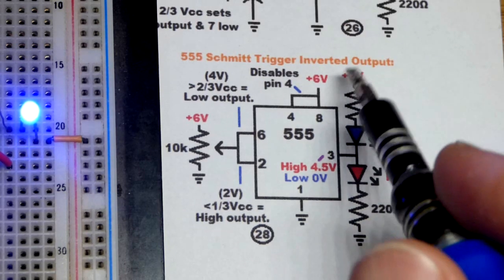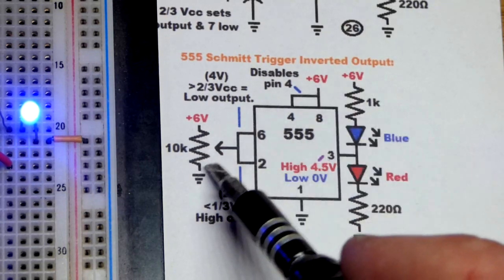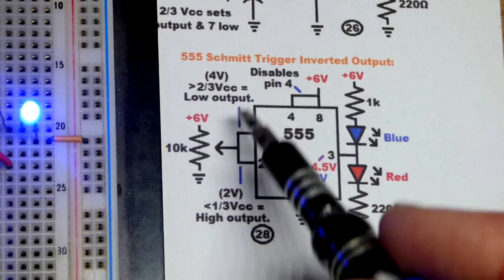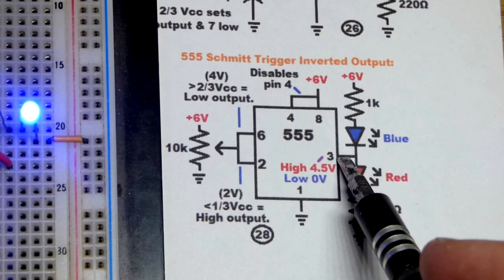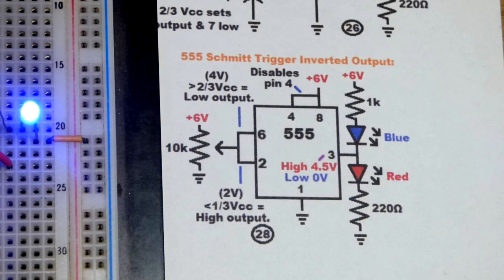You get about 4.5 volts out if you're using 6 volts. But between that one-third and two-thirds supply, the output will just stay whatever it is until you overcome the other threshold voltage of one-third or two-thirds.